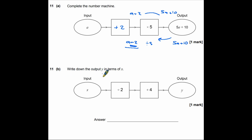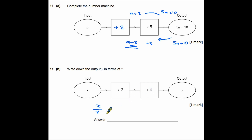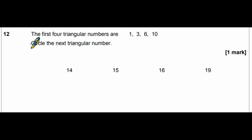In part b, we write the output y in terms of x. Starting with x, we first divide by 2, giving x over 2, then add 4. So the final answer is y = x over 2 plus 4.